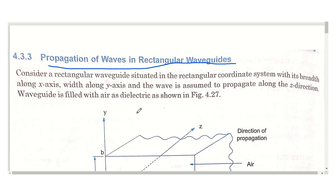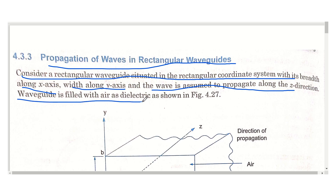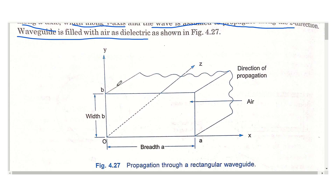First, let us see what is a rectangular waveguide. If the waveguide is in the shape of a rectangle, then we call that type of waveguide a rectangular waveguide. Consider a rectangular waveguide situated in the rectangular coordinate system, with its breadth along the x-axis, width along the y-axis, and wave assumed to propagate along the z direction, with the waveguide filled with a dielectric. The breadth is denoted as A and the width as B.